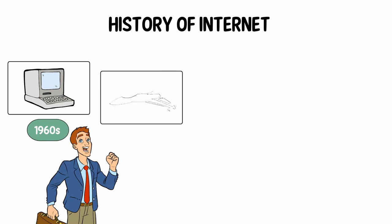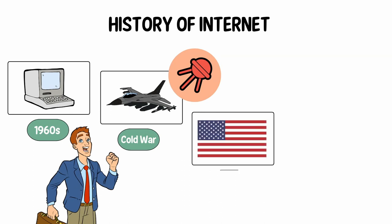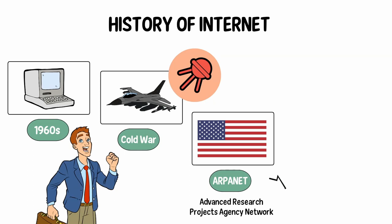Another catalyst in the formation of the internet was the heating up of the Cold War. The Soviet Union's launch of the Sputnik satellite spurred the U.S. Defense Department to consider ways information could still be disseminated even after a nuclear attack. This eventually led to the formation of the ARPANET, Advanced Research Projects Agency Network.